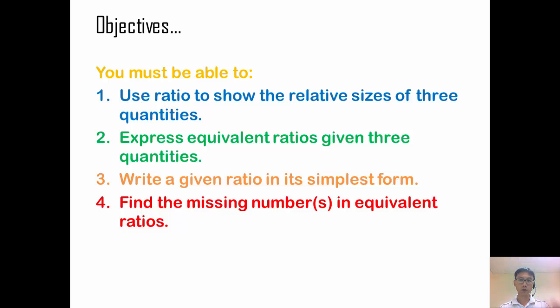And then you express equivalent ratios using three quantities, again it's similar to a two quantity concept. Write the given ratio in its simplest form, again it's similar to a two quantity, and then find a missing number in equivalent ratios. Again it's all similar to two quantities. So not difficult.